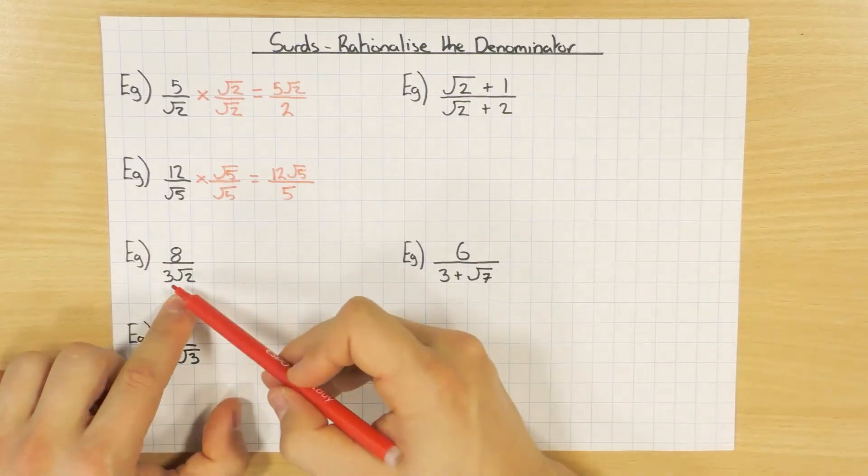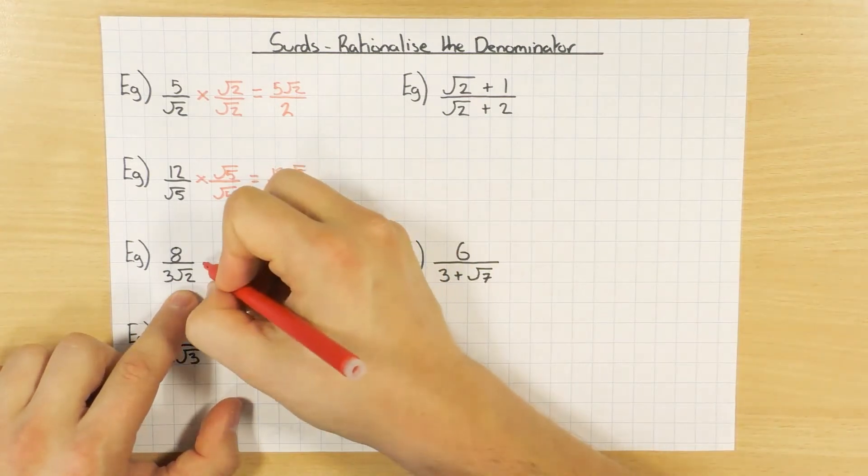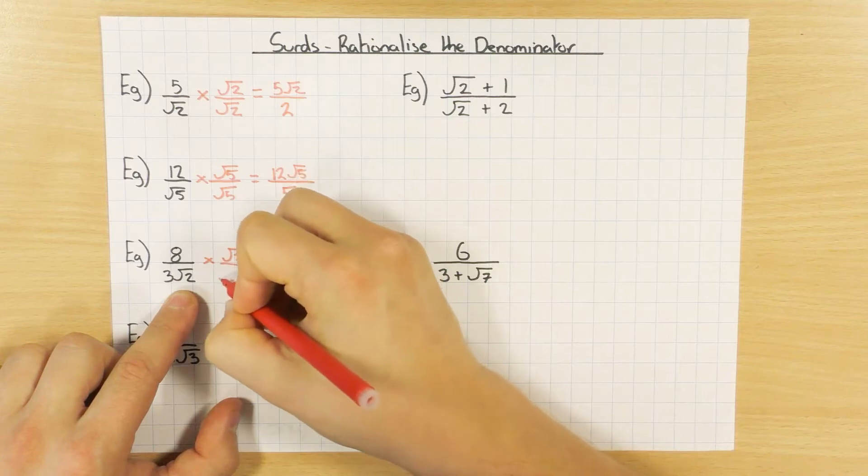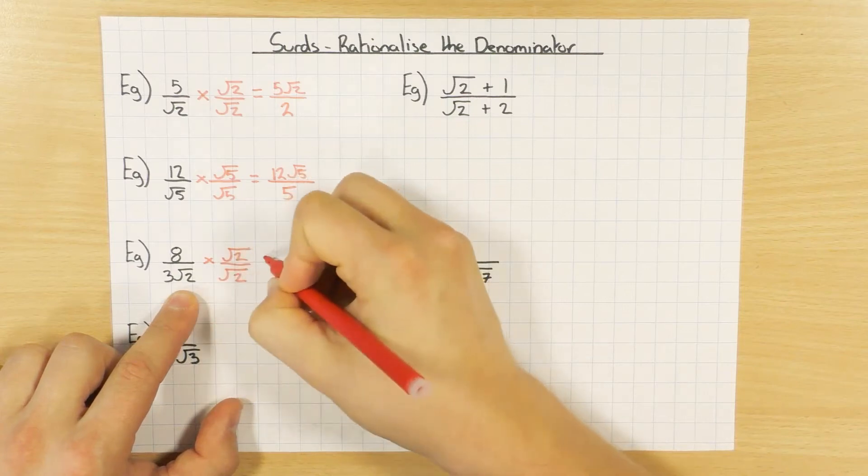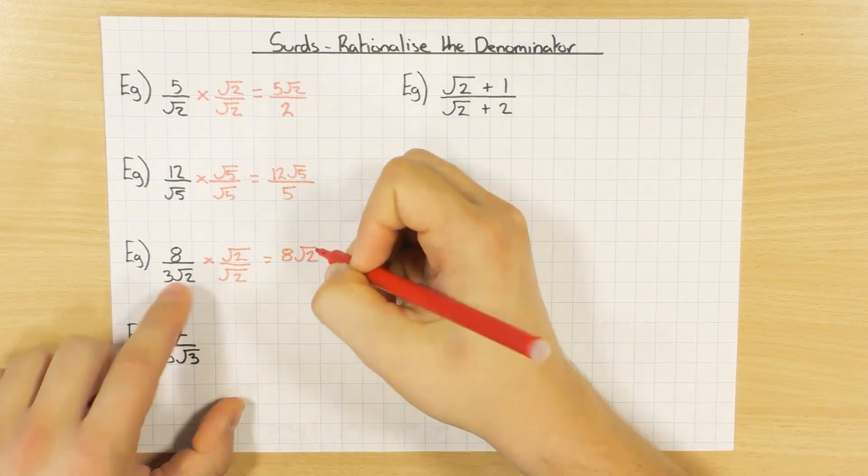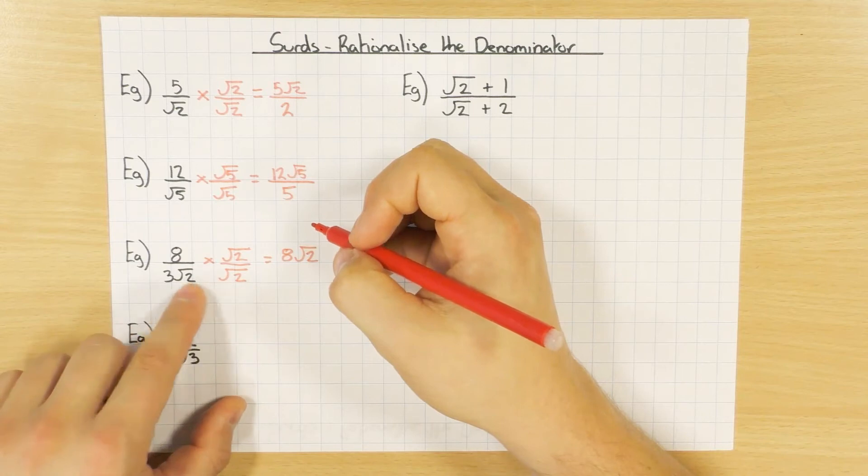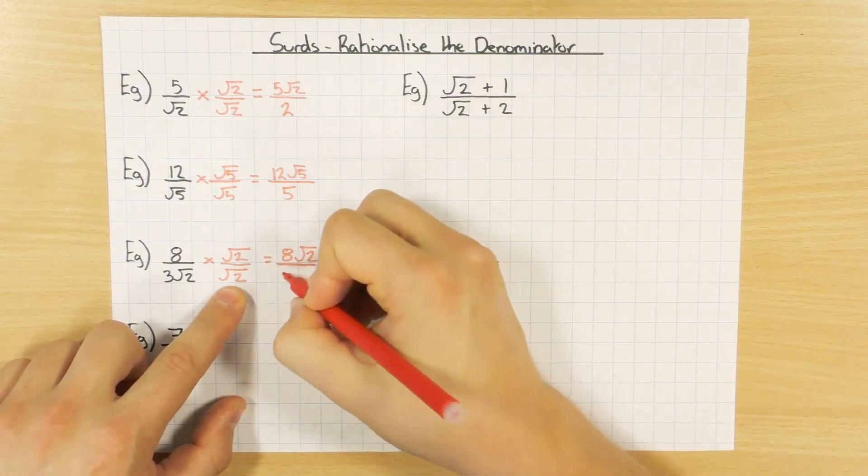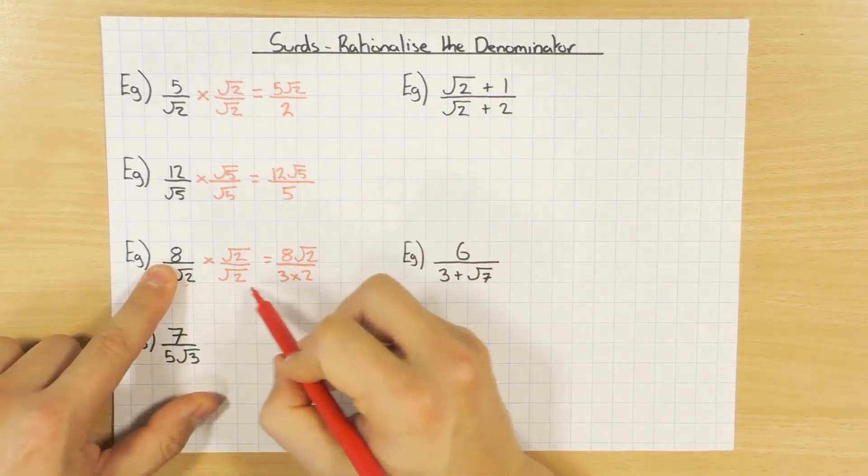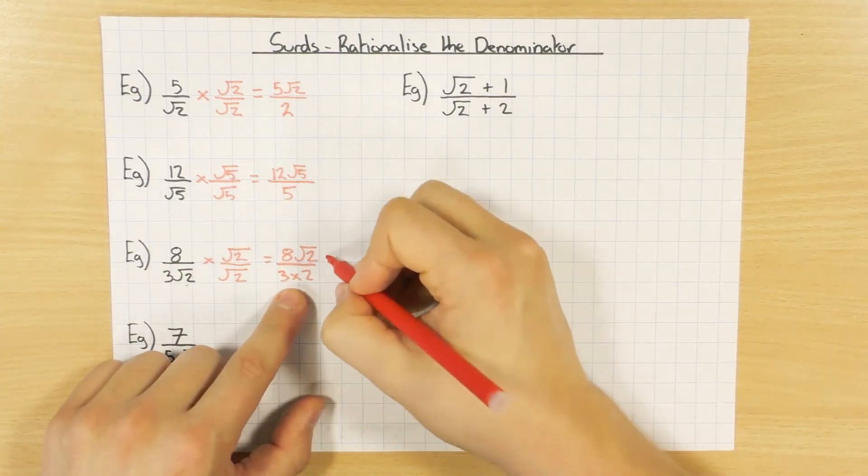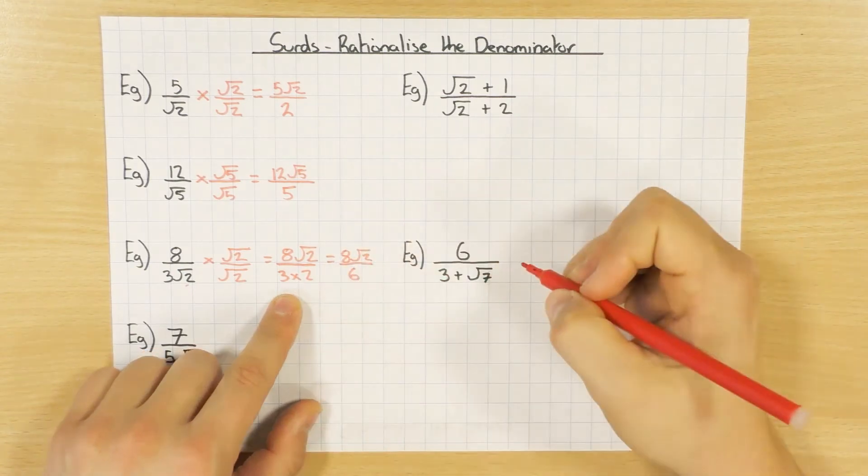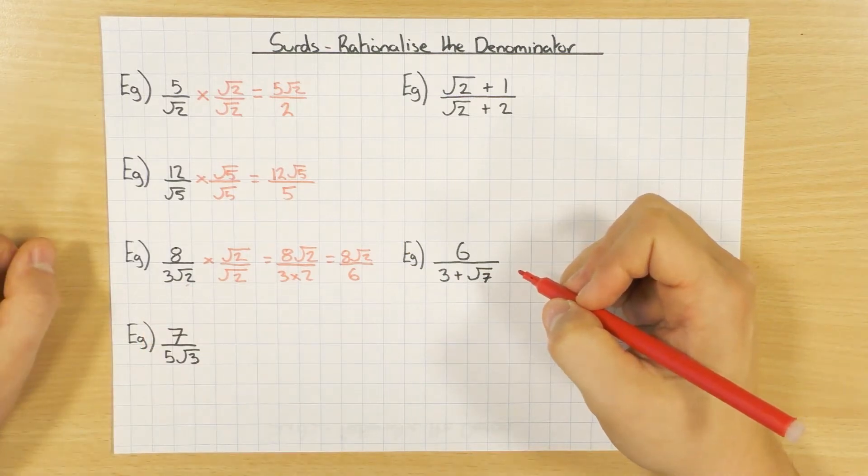This one here, don't be put off if it's 3 root 2. Exactly the same process. I'm going to times both top and bottom by root 2, which is going to be 8 times root 2, which is 8 root 2. Now root 2 times root 2 is going to be 2, so actually what I'm going to have here is 3 times 2, because the 3 is just 3, and then root 2 times root 2 is 2. So what I'm actually going to have is 8 root 2 on top over 6. So just be a little bit careful with that, just an extra step.